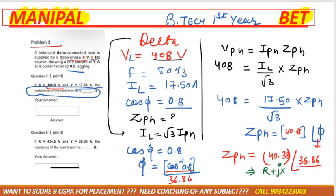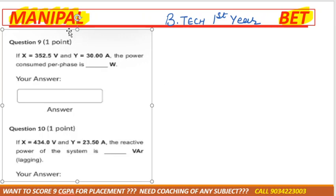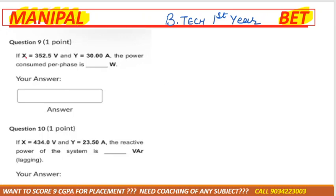Convert ZPH into rectangular form R + jXL. After comparing the equation, you get the resistance R = 32.305. Similarly, you can get XL as well for the reactance part.